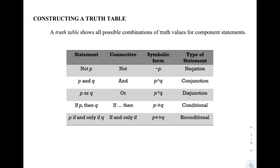Hello class, welcome to my channel. Our topic in this video is about constructing a truth table. A truth table shows all possible combinations of truth values for component statements. The truth value of a compound proposition is completely determined by the truth values of its sub-propositions. It uses logical connectives to form the compound propositions.